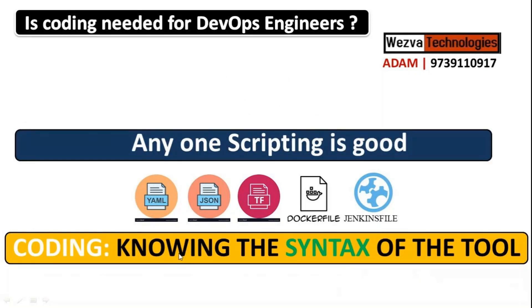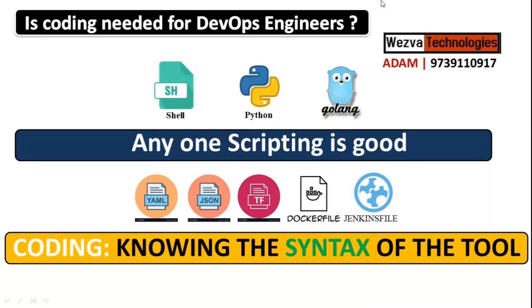Along with coding, you also need to know scripting because scripting can help you do a lot of automations that a tool cannot do. Every tool helps with some automation, but there are small automations a tool will not handle. In that case you have to use some kind of script in your day-to-day work to support. It is not mandatory — only when needed should you be able to do that activity.